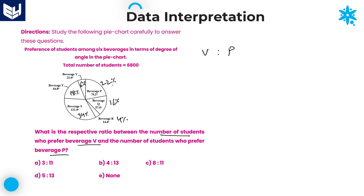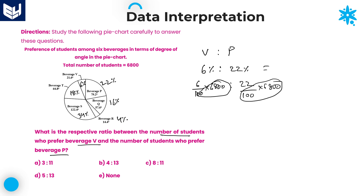V and P ratio: number of students who prefer beverage V is 6 percentage, and P is 22 percentage. There is no need to calculate their exact values. Both involve the same factor of 6,800, so it cancels out. Cancel 6 and 22 — divide both by 2 giving 3 and 11. Therefore the ratio of beverage V to P is 3:11. Option A is the right answer. As we calculated the percentages first, the task is very easy.